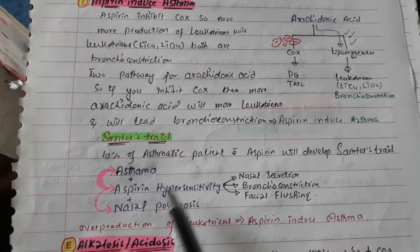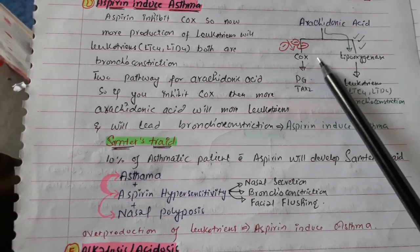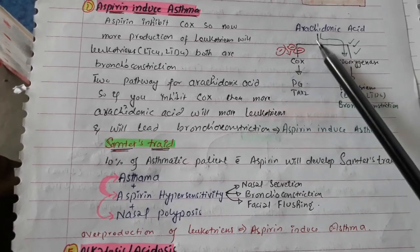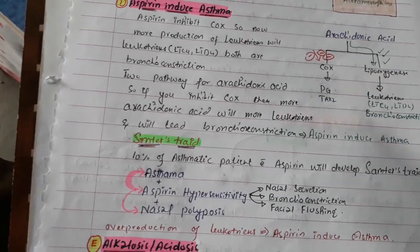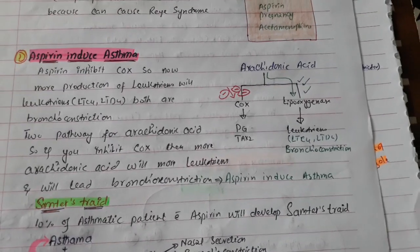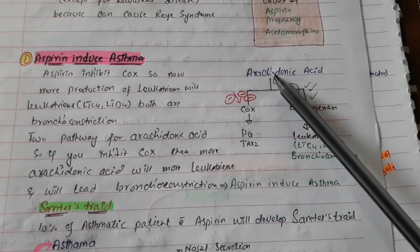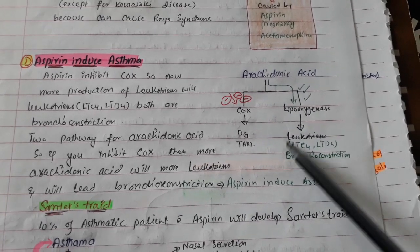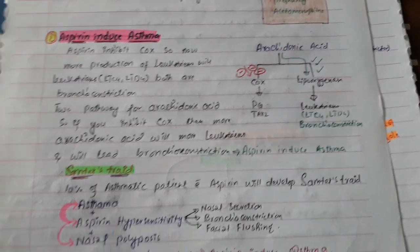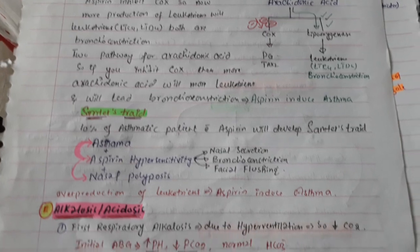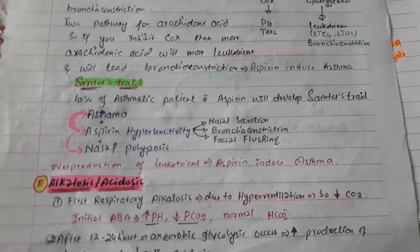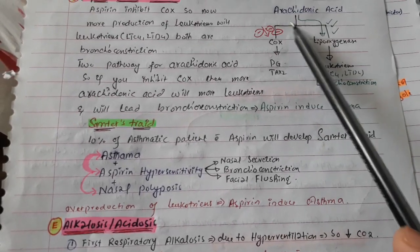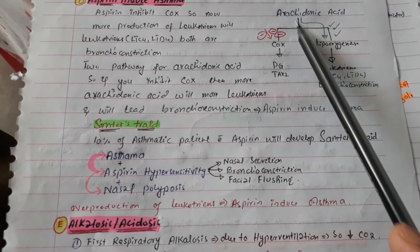The aspirin hypersensitivity triad includes nasal secretion, bronchoconstriction, facial flushing, and nasal polyposis. The concept is: if you inhibit COX, arachidonic acid will pass through the lipoxygenase pathway to form more leukotrienes, which causes bronchoconstriction. Overproduction of leukotrienes will induce asthma.